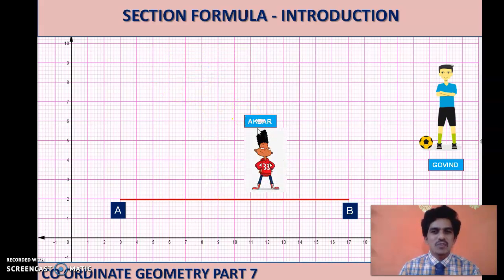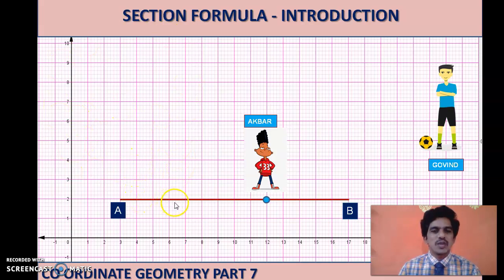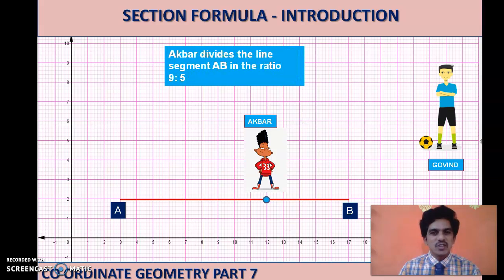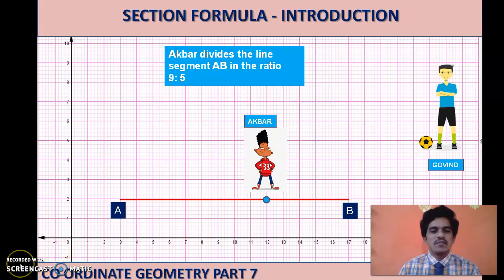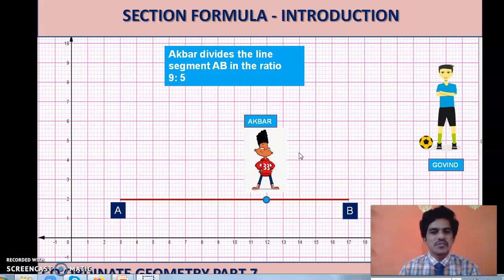Let us take the third case — Akbar, who has a sky blue colored dot. We count the number of units to his right side: there are nine units, and to his left side there are five units. The ratio is 9 is to 5. As 9 and 5 do not have a common factor, we leave it as it is. The ratio of Akbar is 9 is to 5.